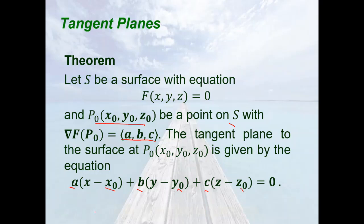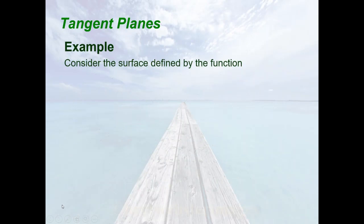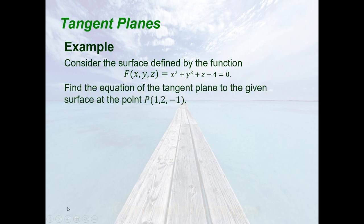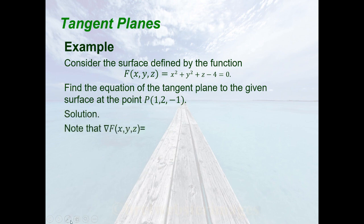Let's make this clear with an example. Consider the surface defined by f(x, y, z) = x² + y² + z − 4 = 0. Find the equation of the tangent plane to the given surface at the point (1, 2, −1). We need a vector normal to the surface, obtained from the gradient of f at (1, 2, −1). Recall that the gradient of f is the vector whose components are the partial derivatives of f with respect to x, y, and z.